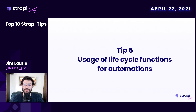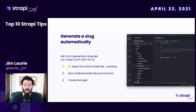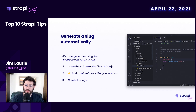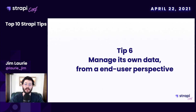Let's see how to use these functions with the following example: you want to generate a slug for your article collection type — a stringified version of the title concatenated with the creation date. To do that, you will have to create a beforeCreate function for your article collection type. When an article is created, this function will be called just before the creation.